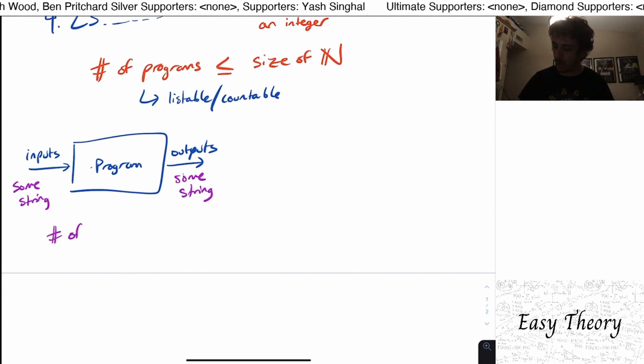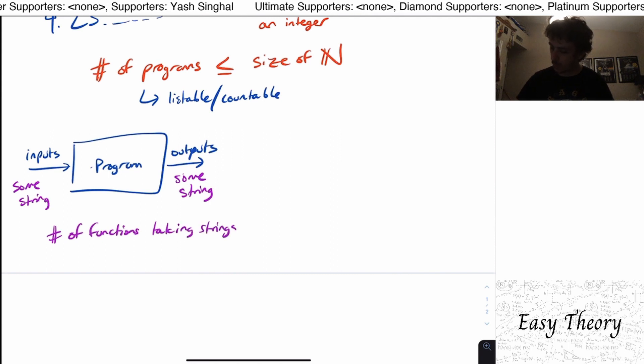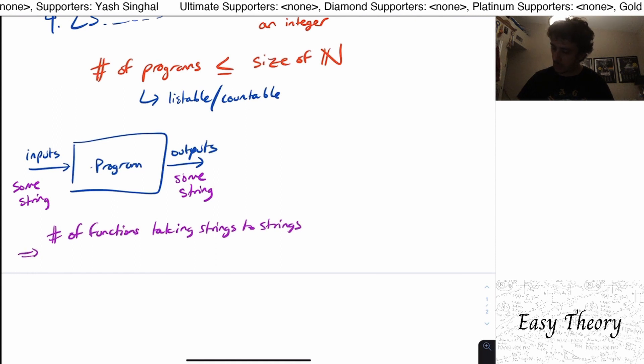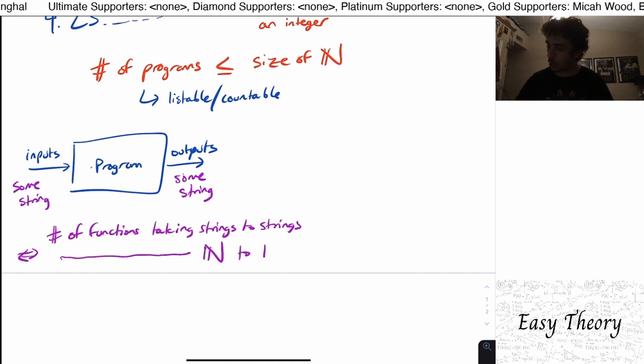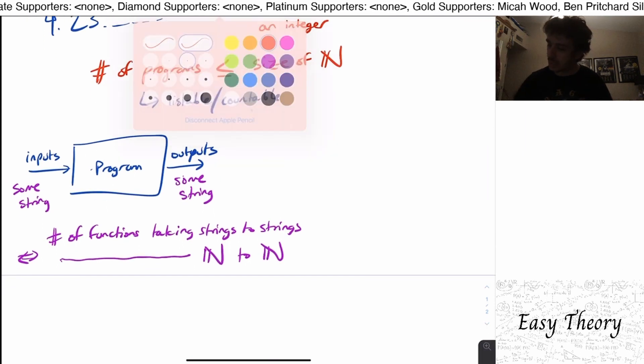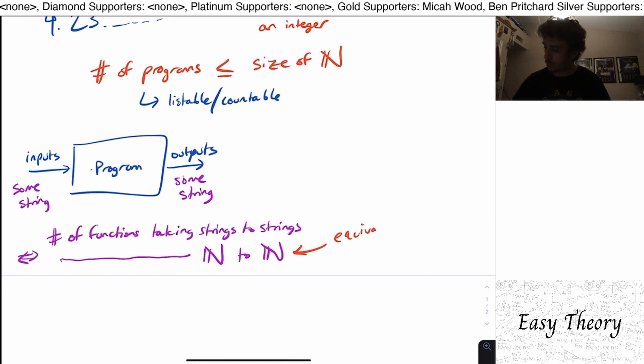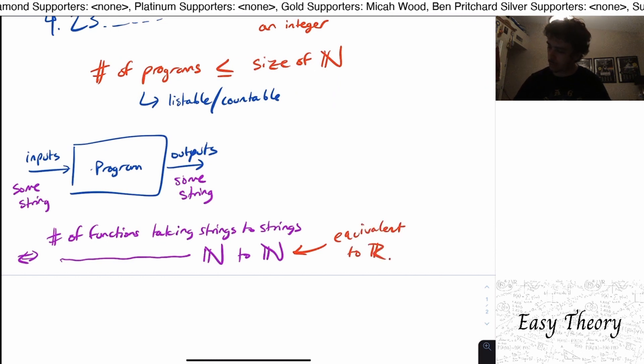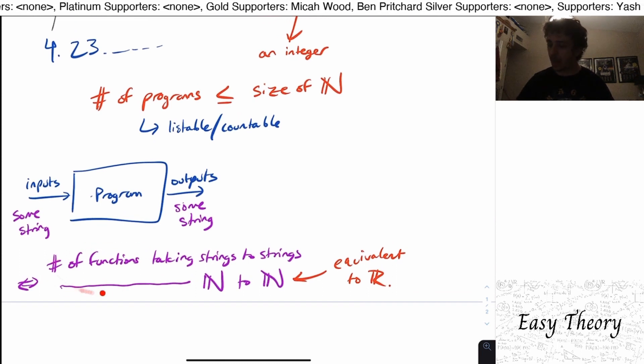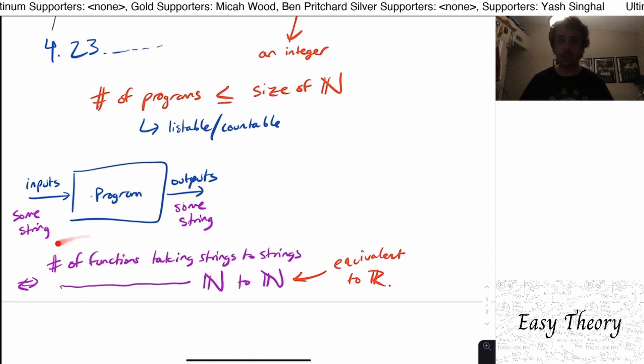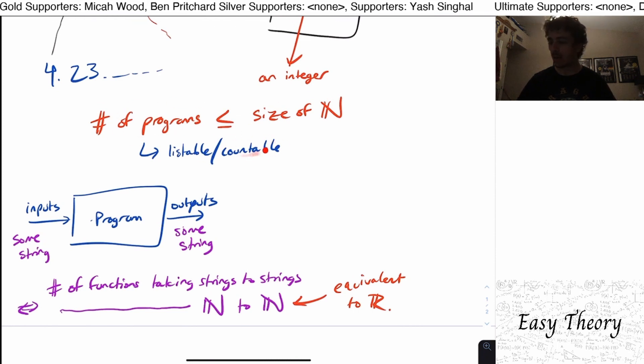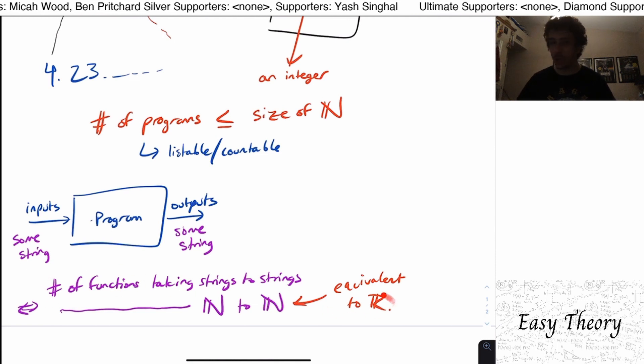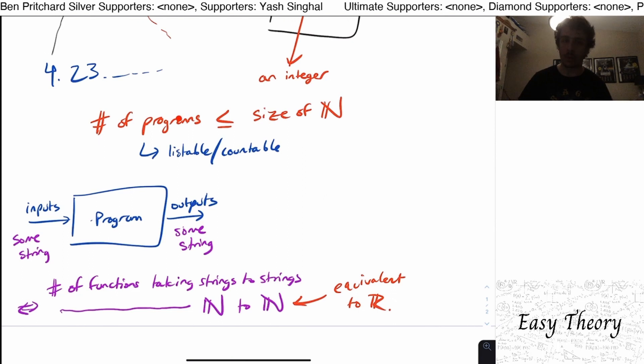So what we're really asking is the number of functions taking strings to strings which is equivalent to saying the number of functions taking the natural numbers to the natural numbers. And what you can show is that this thing is equivalent to the real numbers. So this is the set of all possible ways that a program could potentially compute but the number of those programs is only countable. So therefore the number of functions is uncountable but the number of programs to actually solve problems is countable.